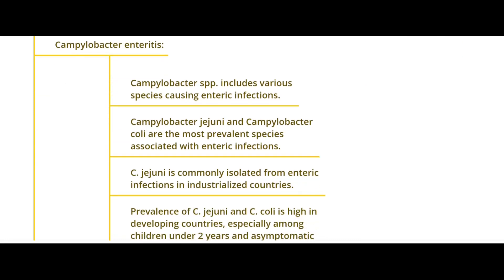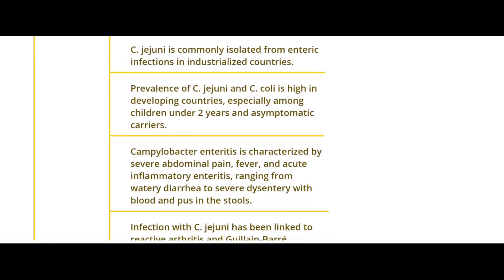Campylobacter enteritis includes multiple species that can cause enteric infections. The most prevalent are Campylobacter jejuni — which can also cause pseudo-appendicitis — and Campylobacter coli. Campylobacter jejuni is commonly isolated from enteric infections in industrialized countries and is the most common cause of diarrhea there. The prevalence is high in developed countries especially among children under two years and asymptomatic carriers. Characteristics include severe abdominal pain, fever, and acute inflammatory enteritis.